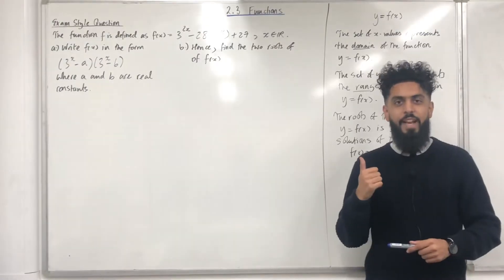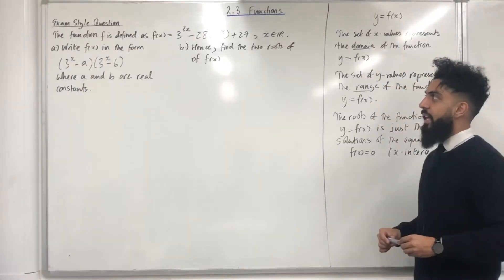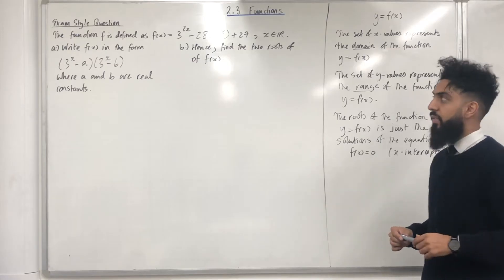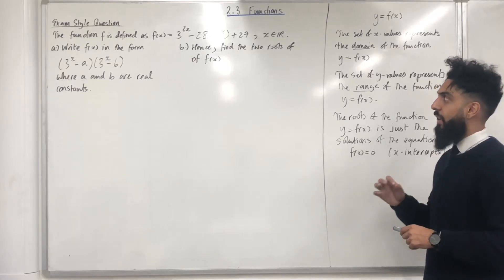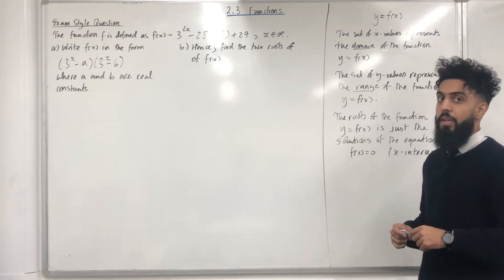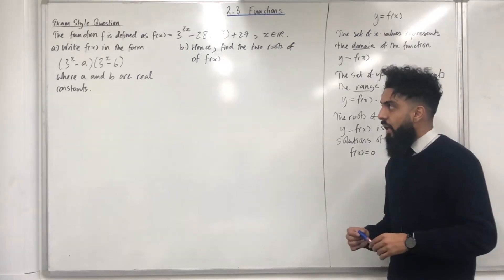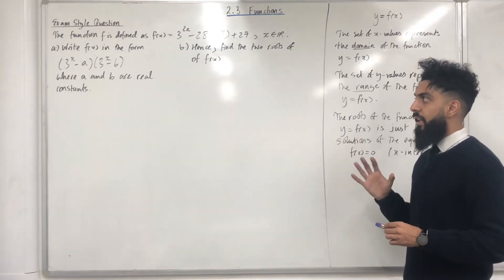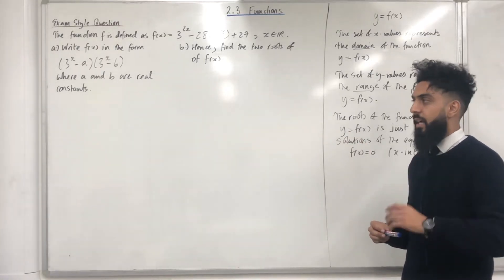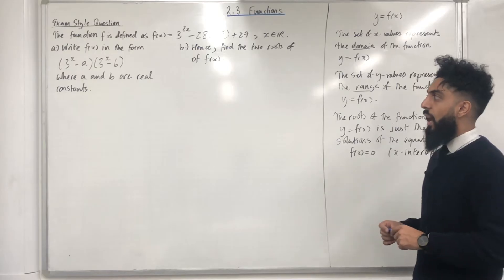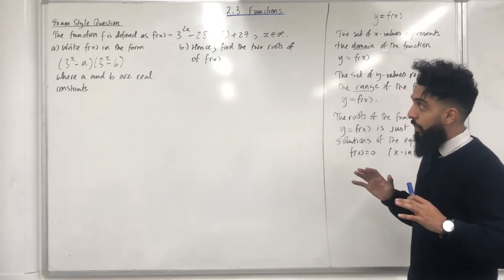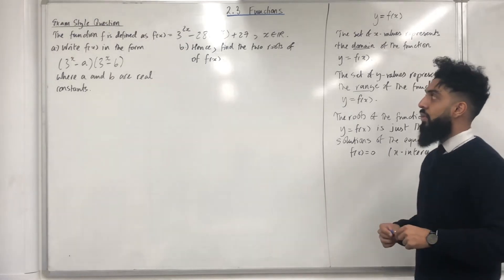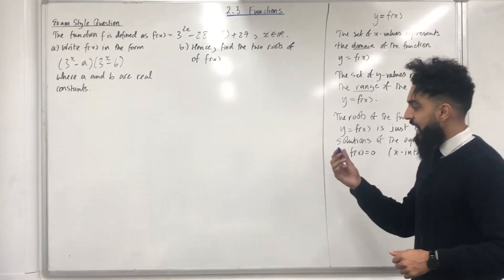Here is an exam style question. The function f is defined as f of x is equal to 3 to the power 2x minus 28 multiplied by 3 to the power x plus 27, where x is an element of the real number set. Part A: write f of x in the form 3 to the power x minus a, multiplied by 3 to the power x minus b, where a and b are real constants. Part B: hence, find the two roots of f of x.